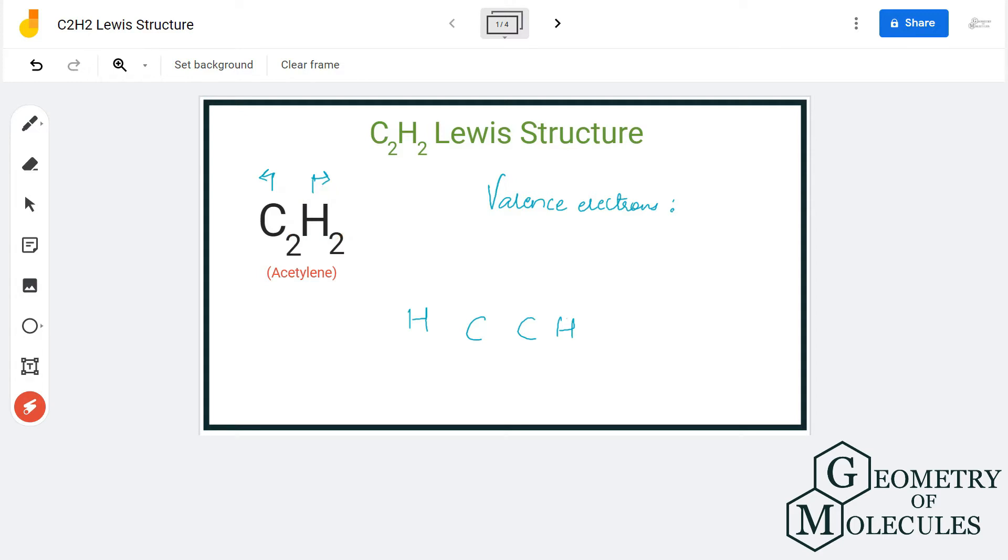To understand the Lewis structure of this molecule, we will first check the total number of valence electrons. Carbon has four valence electrons and hydrogen has one valence electron in its outer shell. But as there are two of both these atoms, we will multiply this by two for each, so we have a total of ten valence electrons for C2H2.